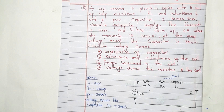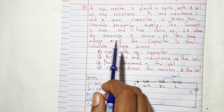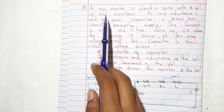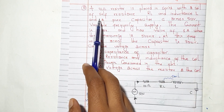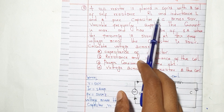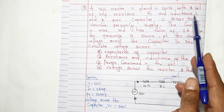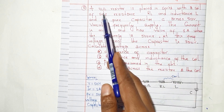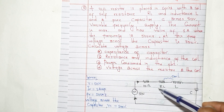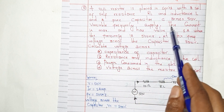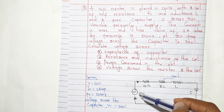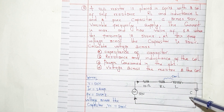Welcome back to the Engineering Lecture Sprint. I am going to solve the Resonance series. This is a 10 ohm resistor placed in series with a coil of resistance R_L and inductance L. This is a 10 ohm resistor, a 2 ohm resistor, and a pure capacitor C across 50 volts.